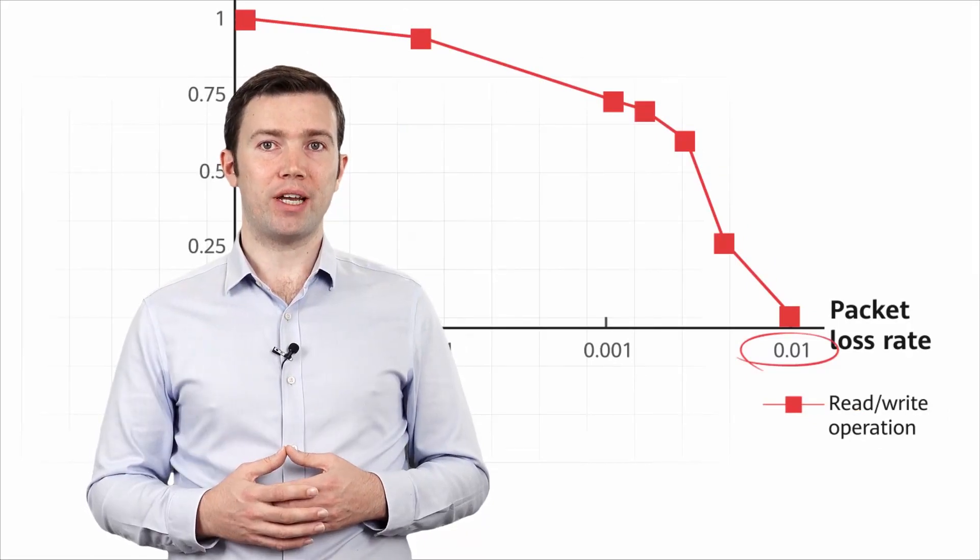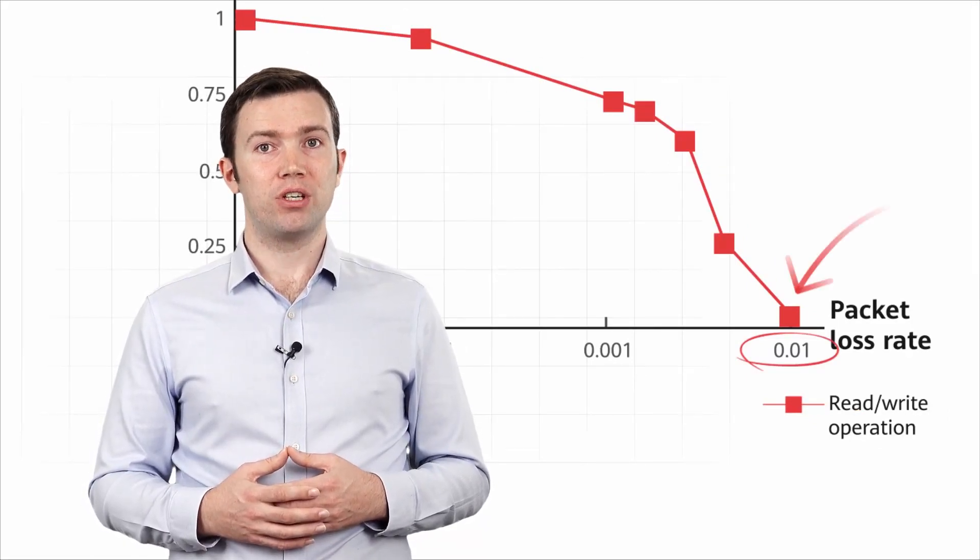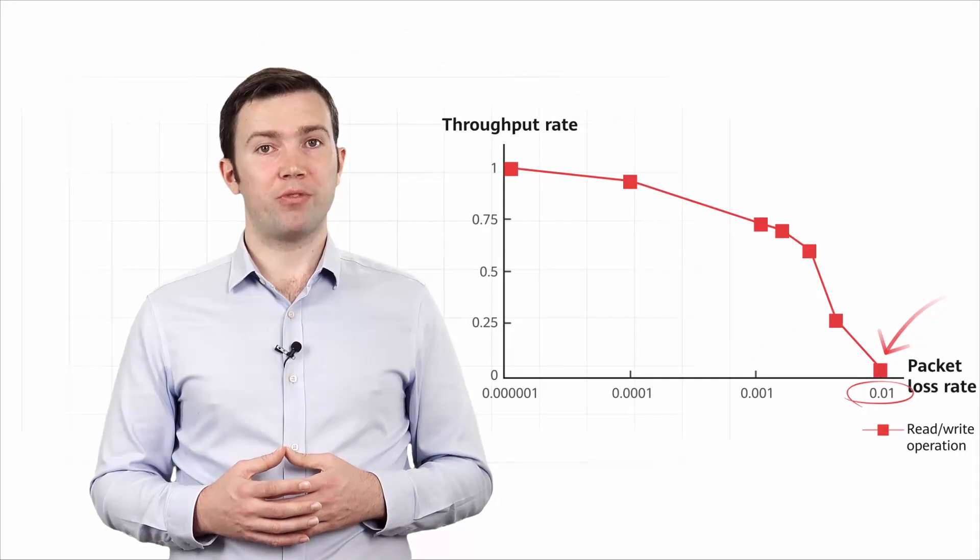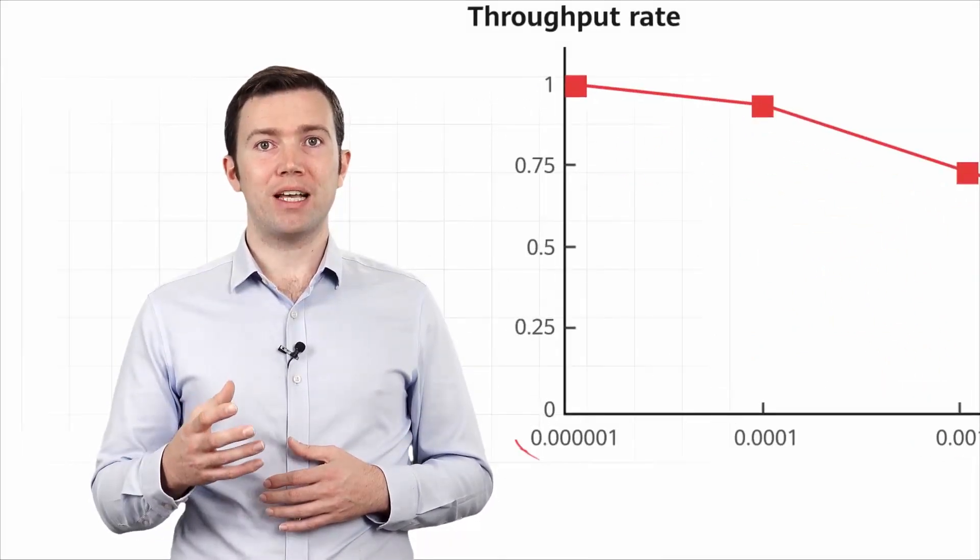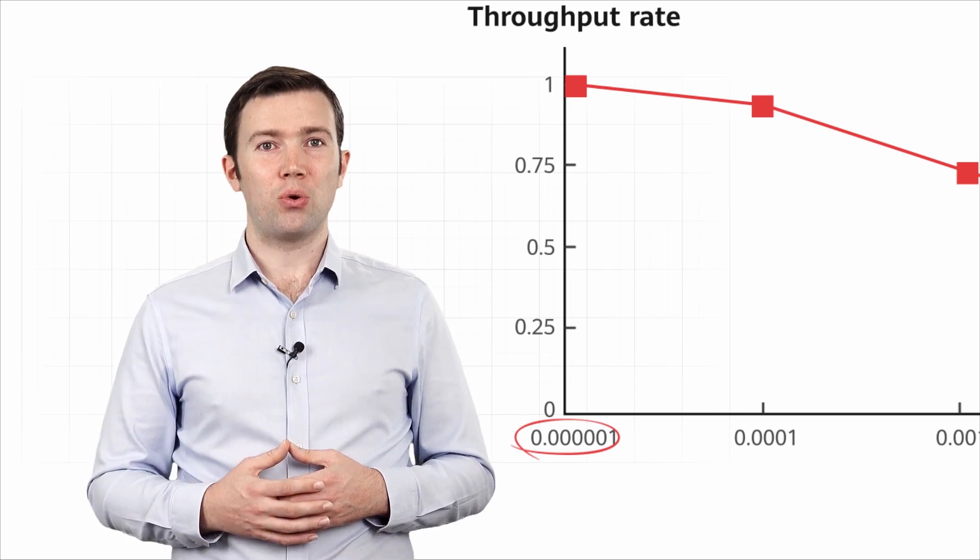Just a 1% packet loss rate will cause the RDMA throughput to drop to zero. To prevent the RDMA throughput from being affected, the packet loss rate must be less than 1 in 100,000, or even as low as zero. To reduce the dependency on dedicated networks and enable RDMA to be carried on Ethernet network, the Ethernet network must be lossless.